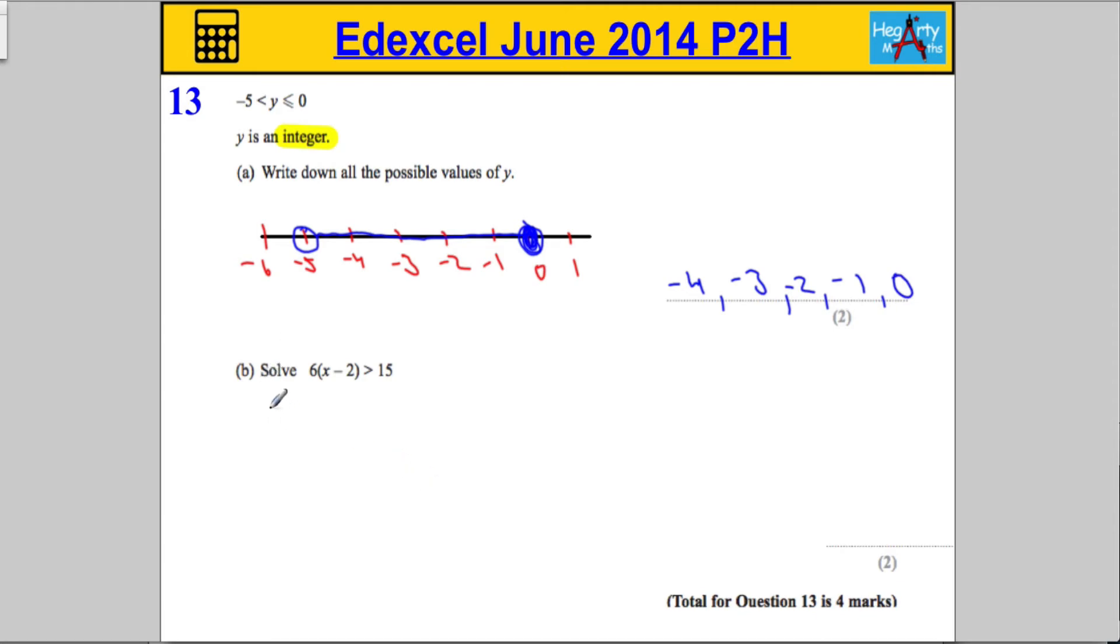So, part B, solve 6 times x minus 2 greater than 15. Most of the time, if that was an equation, people are absolutely fine with it. This is actually tackled in the same way. If you can solve an equation, you should be able to do this.